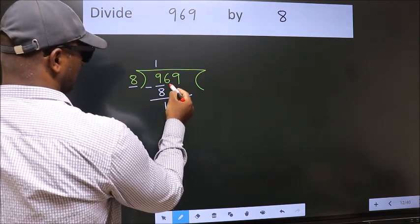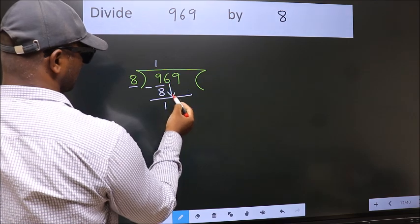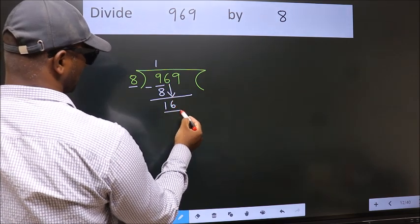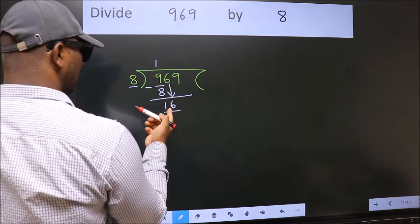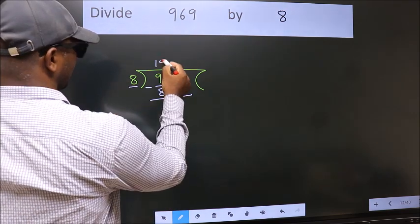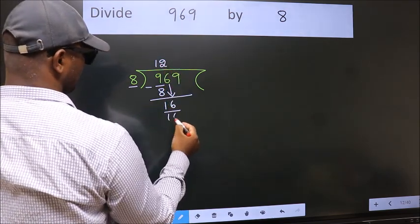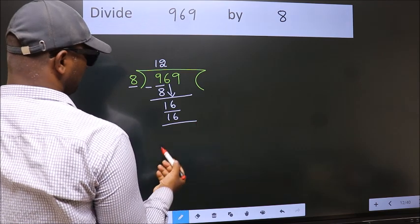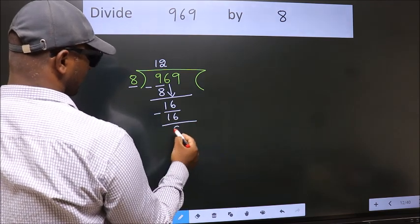After this, bring down the beside number. So, 6 down. So, 16. When do we get 16? In 8 table. 8 twos, 16. Now, we subtract. We get 0.